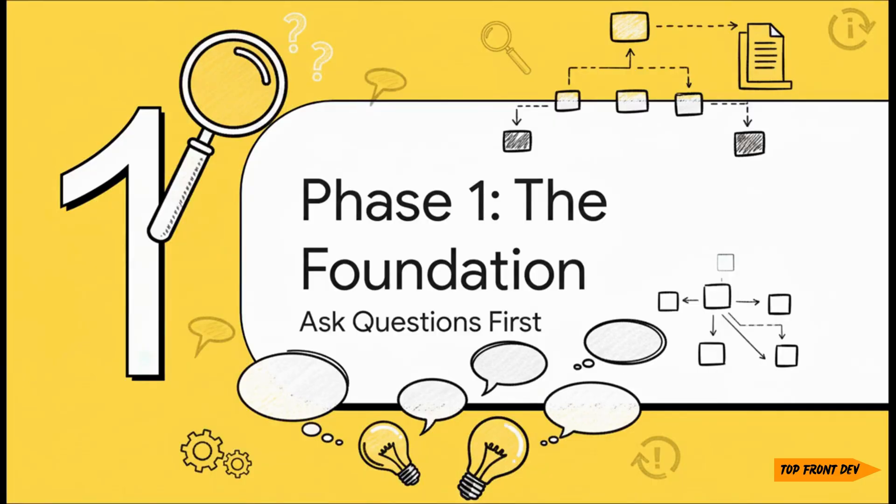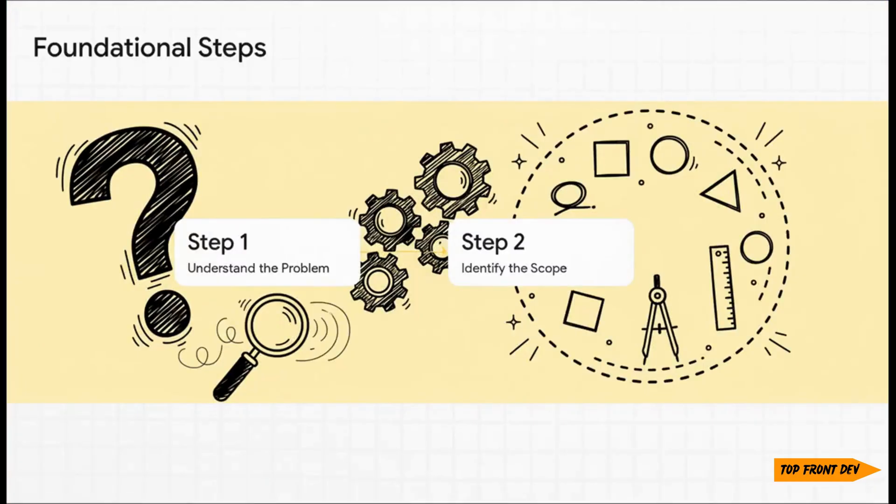First up, phase one: the foundation. This whole part is pure investigation. Before you even start thinking about which database to use or what your API should look like, you have to become a complete expert on the problem you're trying to solve. And this phase really just boils down to two absolutely critical first steps. First, you have to deeply understand the problem. And second, you have to clearly identify the scope of your solution. If you get these two things right, everything else that follows becomes so much easier.